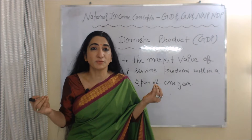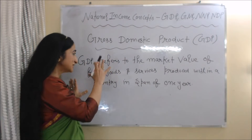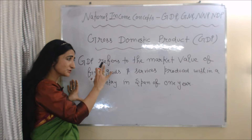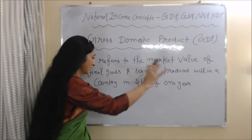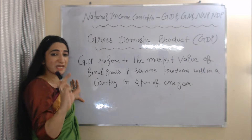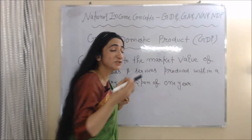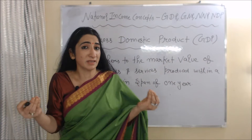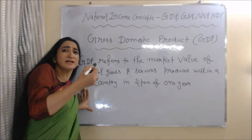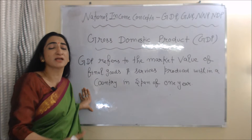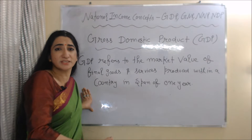Firstly, we talk about gross domestic product, or we can say GDP. GDP refers to the market value of final goods and services produced in a country in a span of one year. Market value means the price at which a product can be sold in the market, and final goods mean those goods ready for the use of the final user — they don't require any further processing.